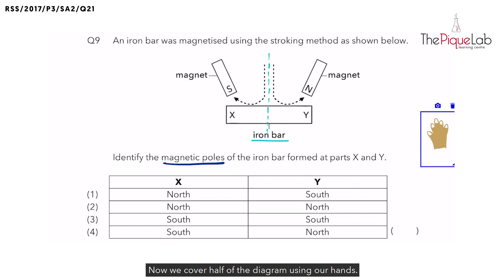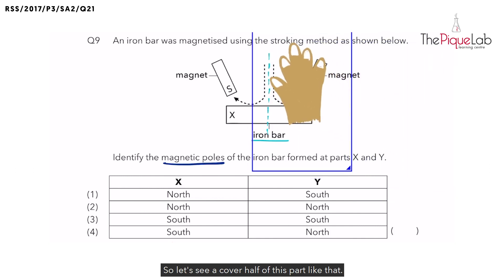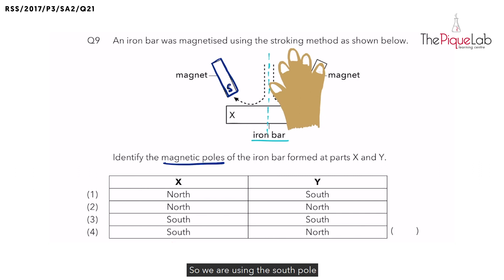Now, we cover half of the diagram using our hands. So let's say I cover half of this part like that. Now, we are going to apply the same method as what we did earlier to solve this question. So we are using the South Pole to stroke the iron bar in this direction. And where are we stamping first? We are stamping this part first.